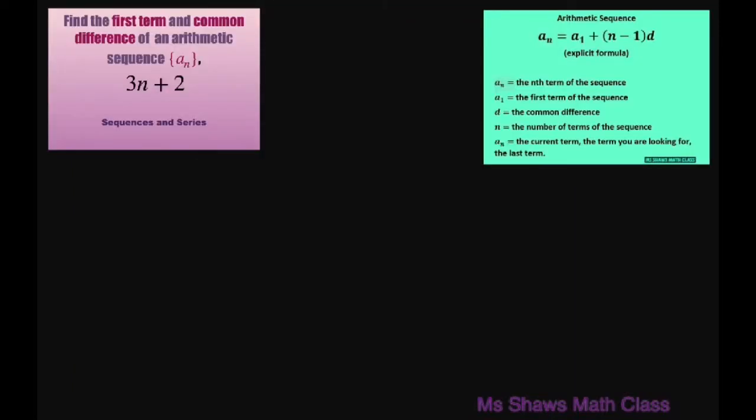So basically we're going to use our explicit formula here and we need the first term. So we have a_n equals 3n plus 2.